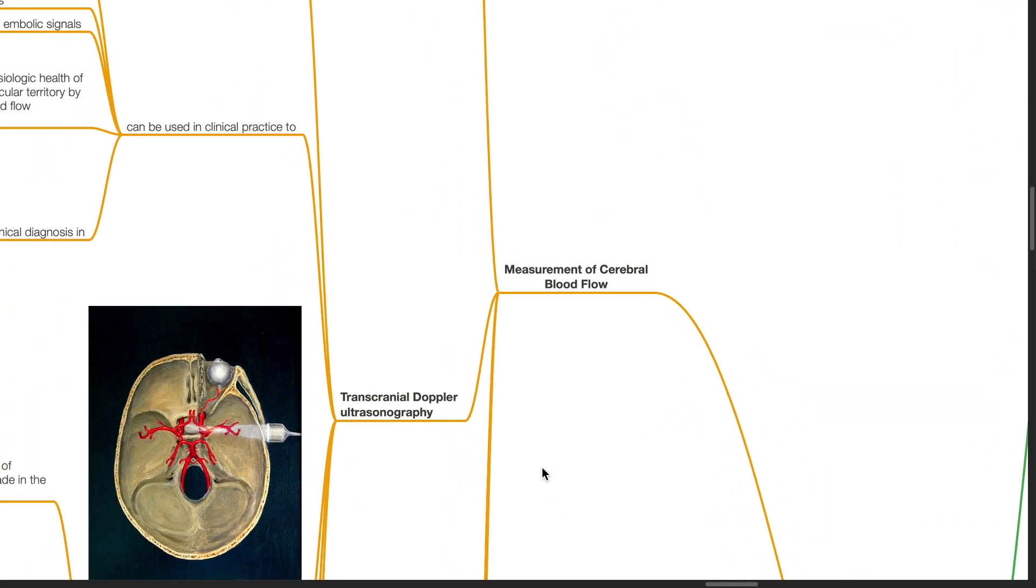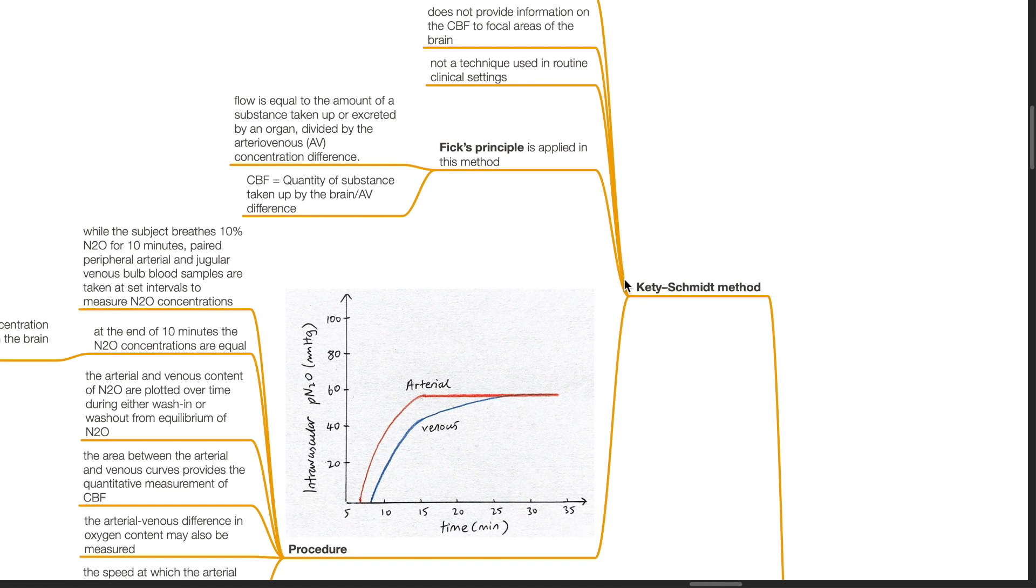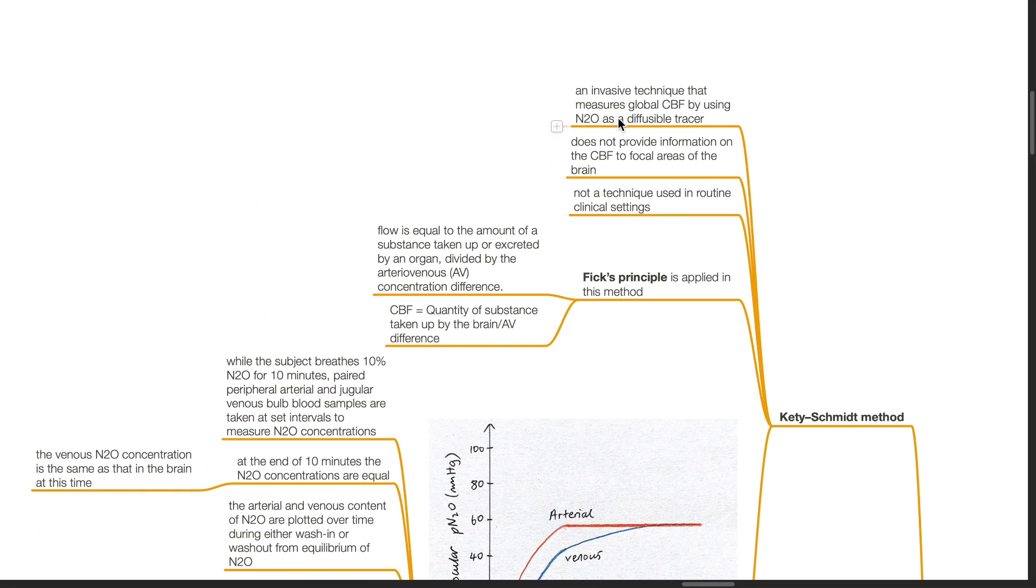Measurement of cerebral blood flow. Ketty-Schmidt method. This is an invasive technique that measures global CBF by using nitrous oxide as a diffusible tracer. It does not provide information on the CBF to focal areas of the brain. It is not a technique used in routine clinical settings.